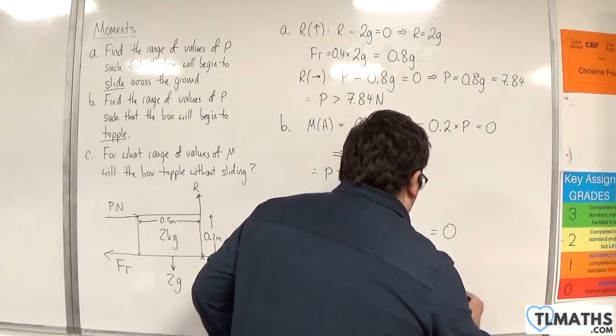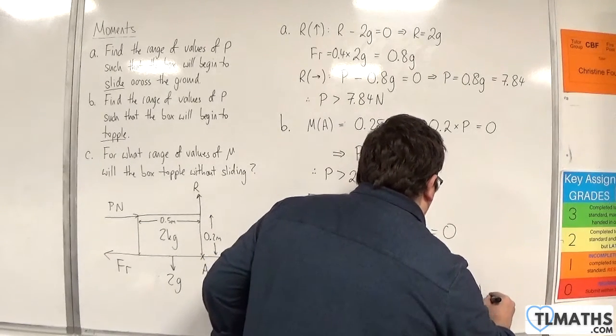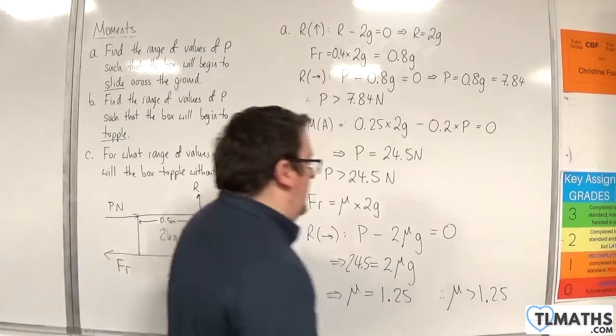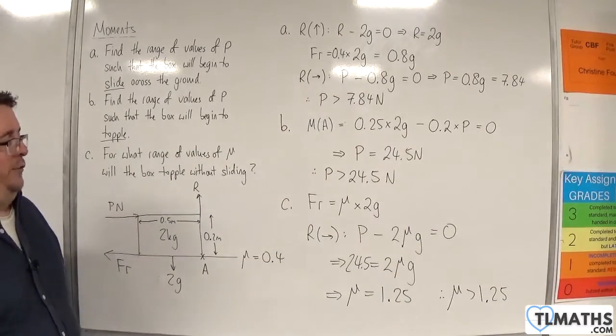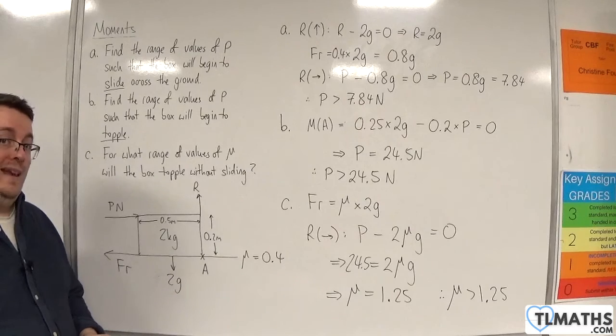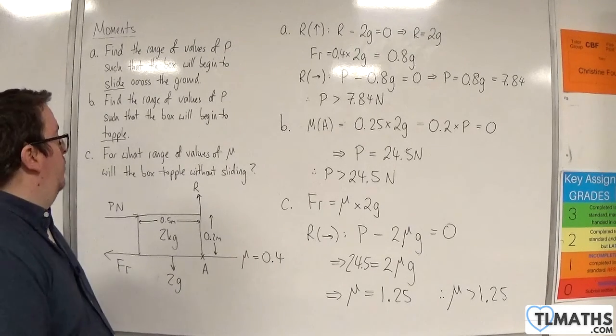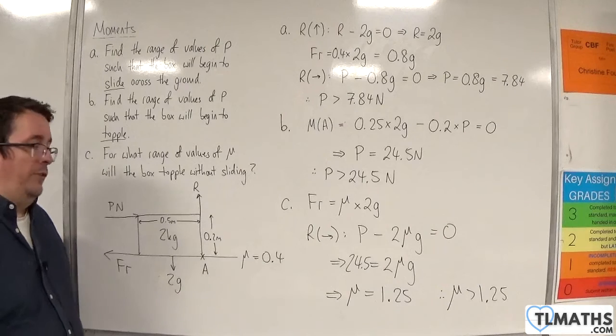Therefore, if mu is greater than 1.25, then what happens is that the block will start toppling before it starts sliding. That means it will topple first, and it won't slide at all.